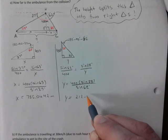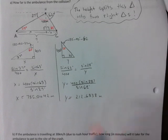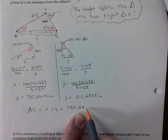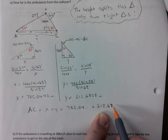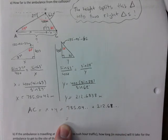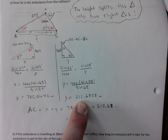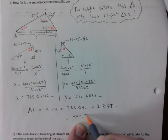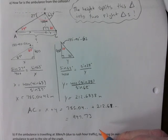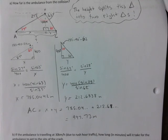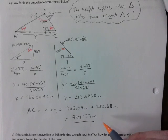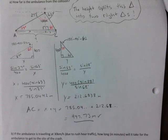So y is equal to 400... 212.6838 meters. AC equals x plus y equals 785.04 plus 212.68, which equals 997.73 meters. That's the answer. I'm always worried when I go off script because I do make mistakes. That's the distance.